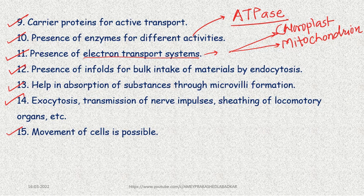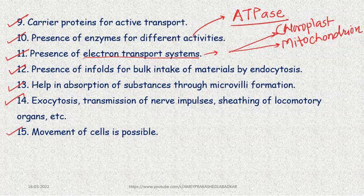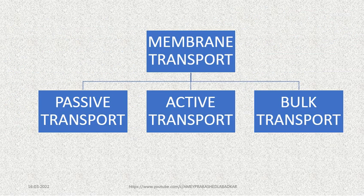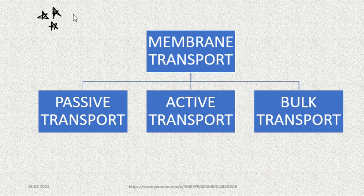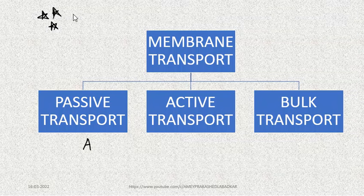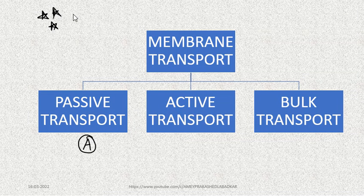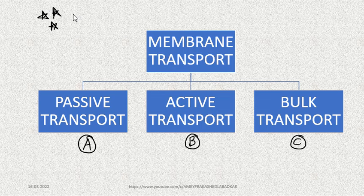The question is: how does the plasma membrane or cell membrane function? This part refers to membrane transport, which is an important point for understanding. Basically, membrane transport has three types: passive transport, active transport, and a third type called bulk transport.